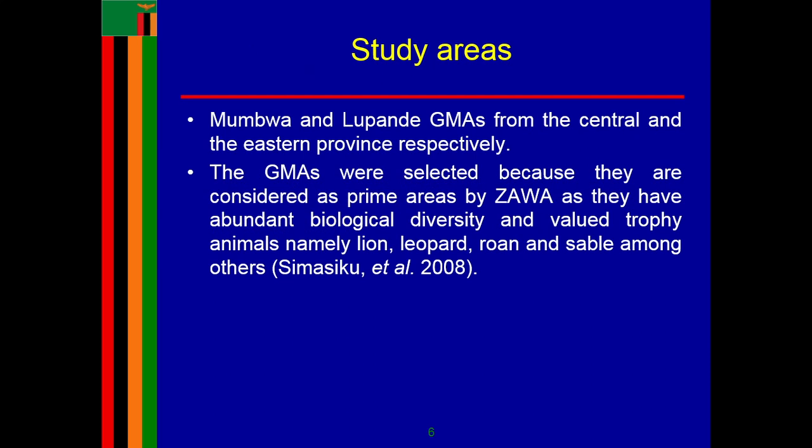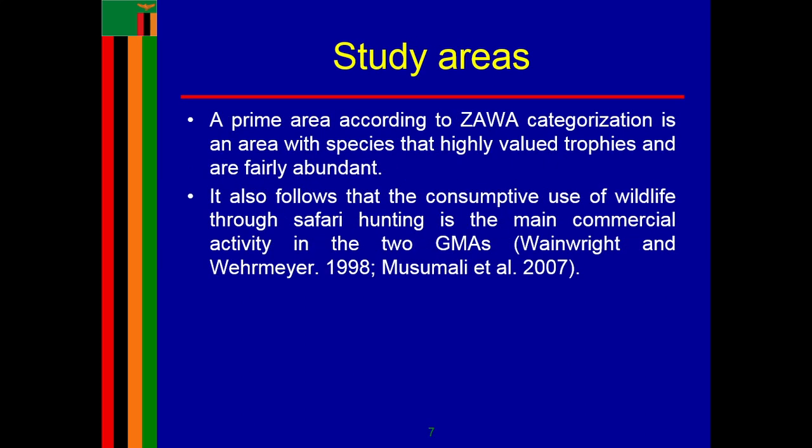The two study areas were Mumbwa and Lupande GMA. The GMAs were selected because they were considered as prime areas by ZAWA, as they have abundant biological diversity and valued trophy animals. A prime area according to ZAWA's categorization is an area with species that are highly valued trophies and are fairly abundant.